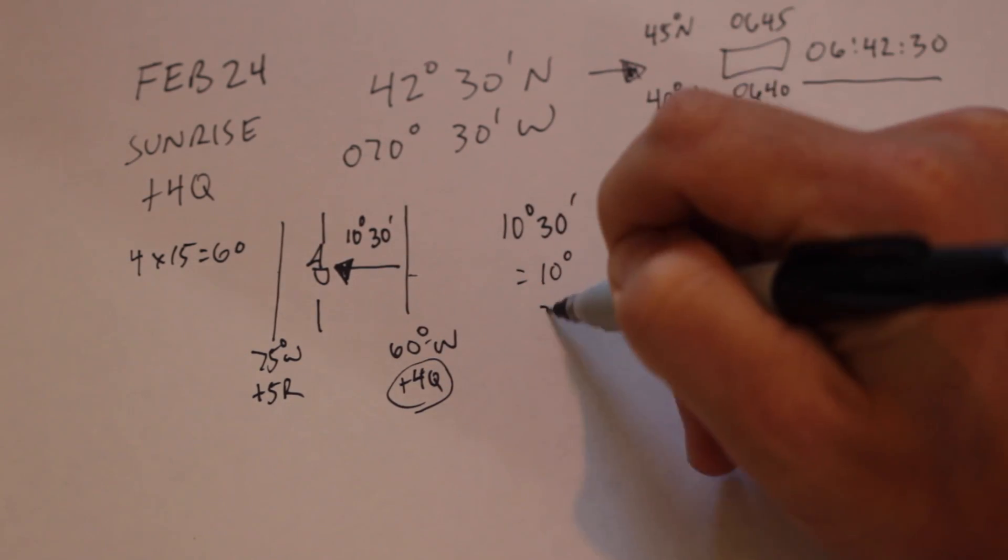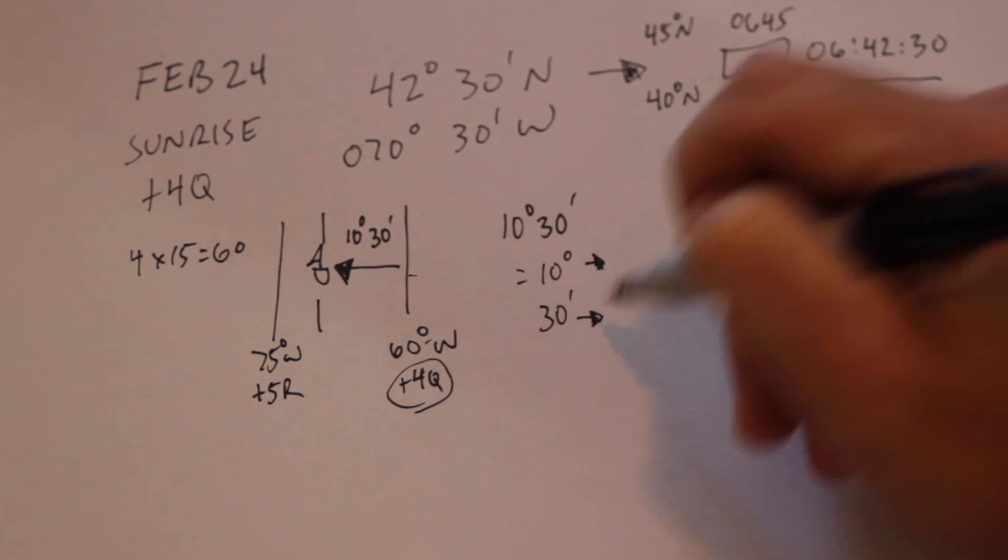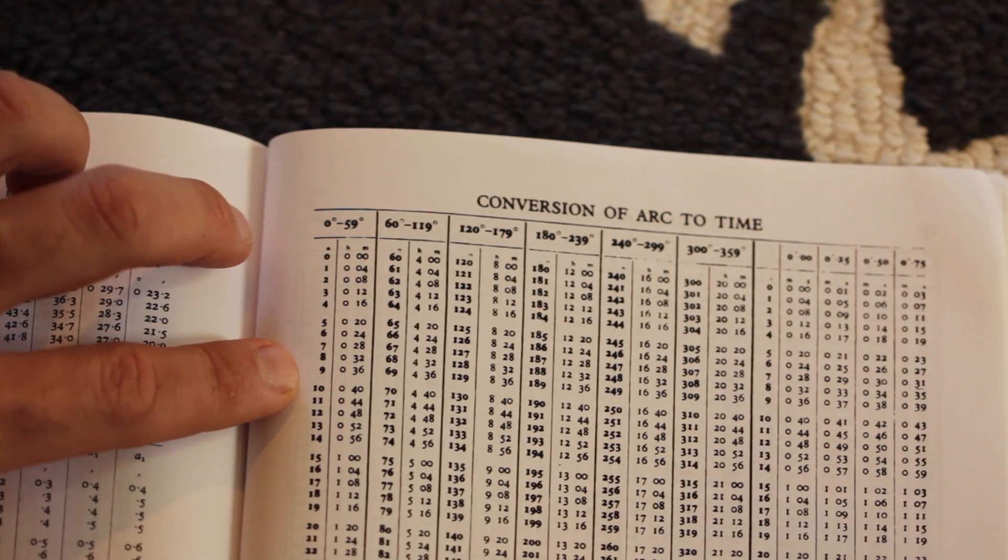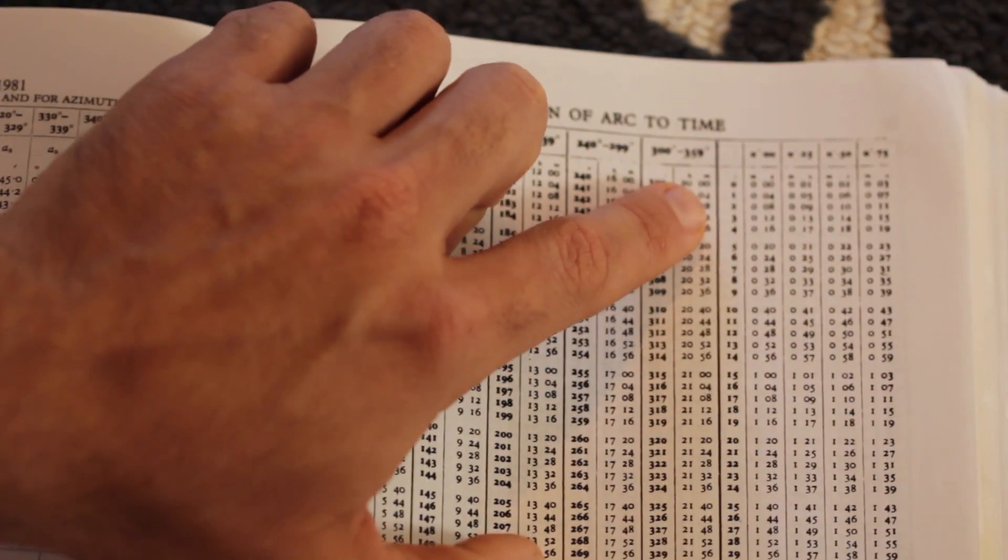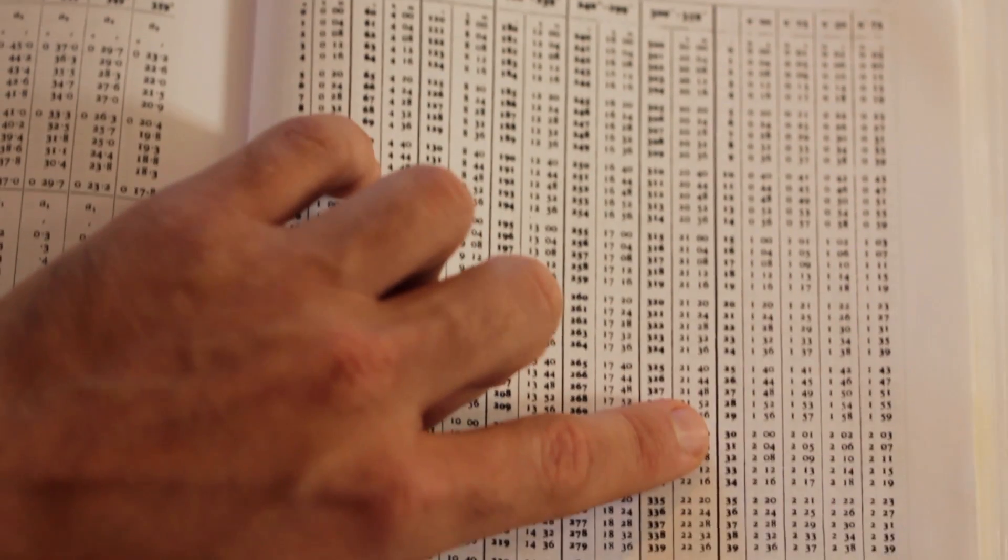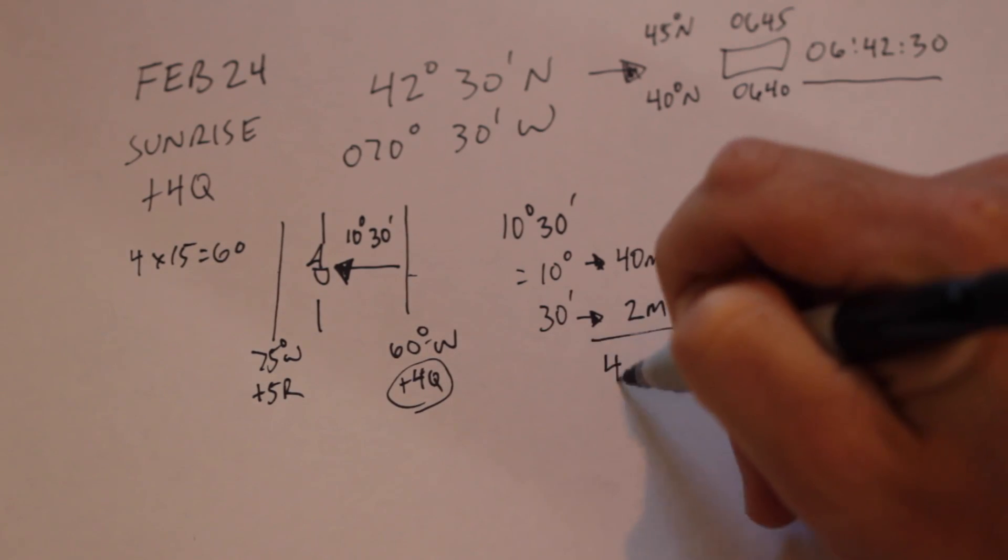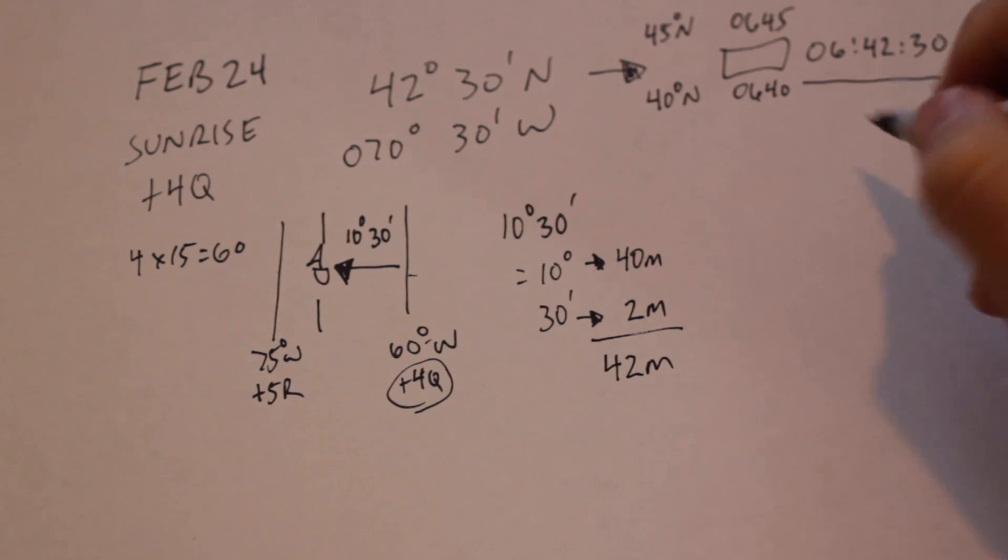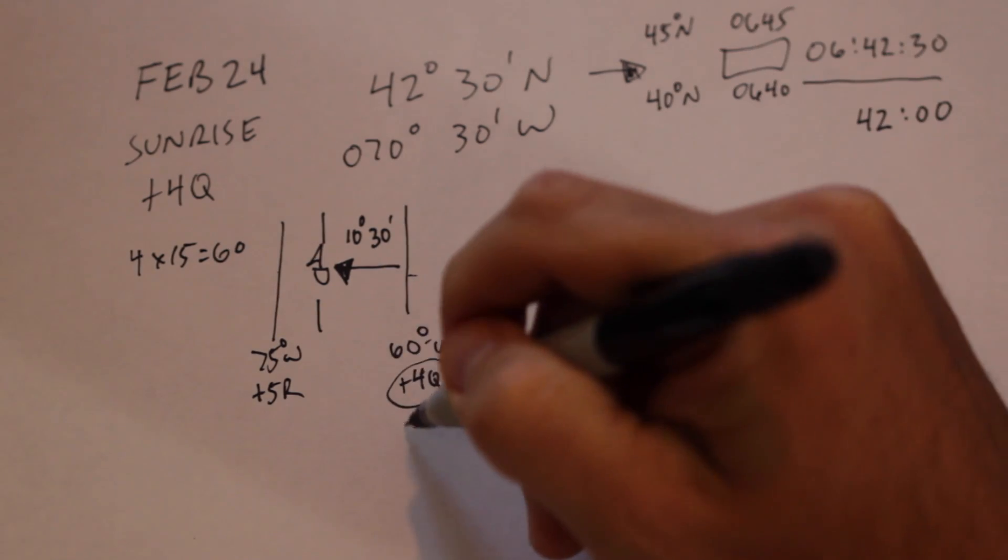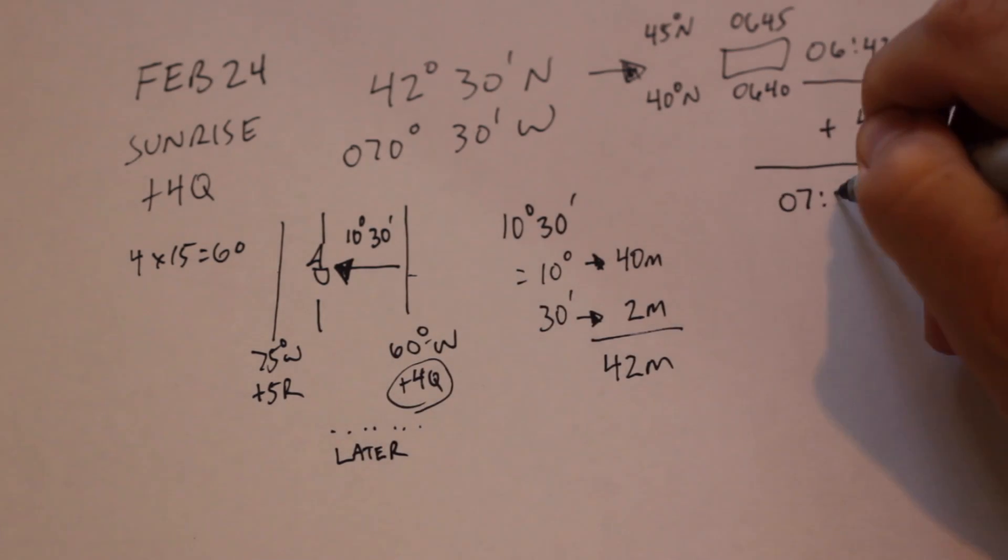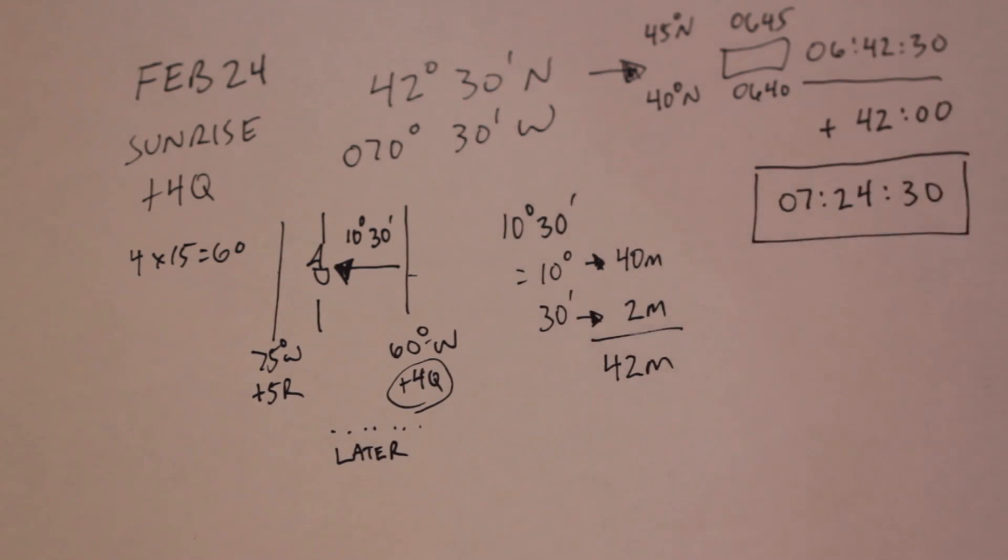So the conversion of arc to timetable tells us that 10 degrees of arc is equal to 40 minutes of time, and 30 minutes of arc is equal to 2 minutes of time. So our total longitude is 40 plus 2, or 42 minutes. Do we need to add or subtract that amount? We need to add it because we are to the west of the standard meridian, and things happen later for us. The final sunrise answer for our position is 0724 and 30 seconds.